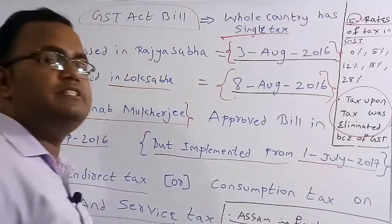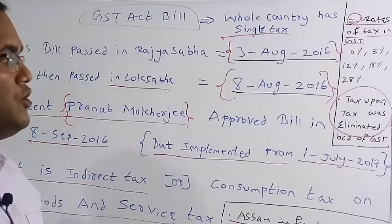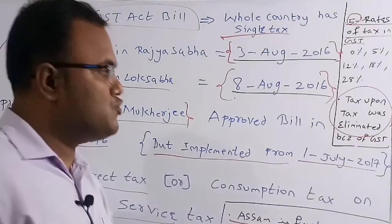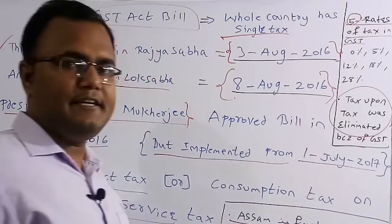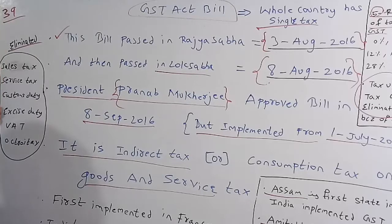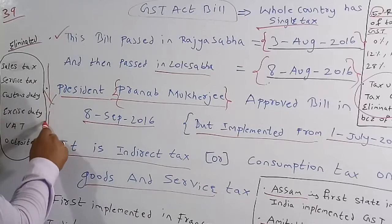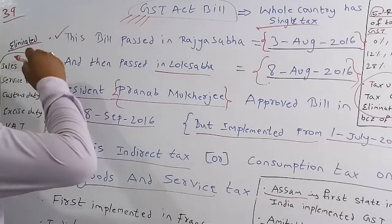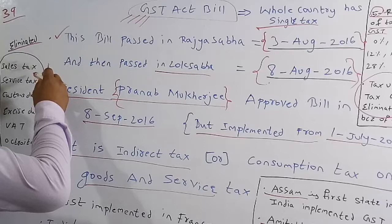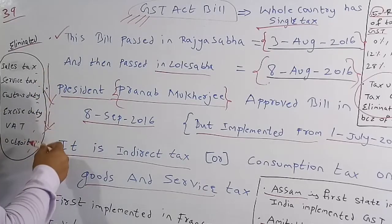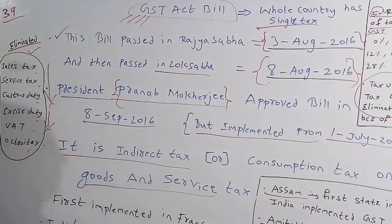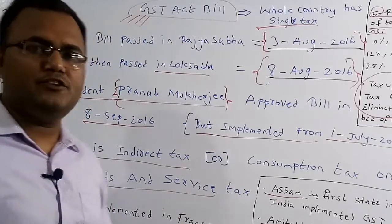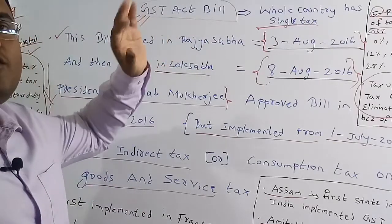Because of GST, tax-upon-tax was eliminated. Previously there were taxes upon taxes, but GST eliminated this. The taxes eliminated include: sales tax, service tax, custom/produce tax, excise duty tax, VAT, and octroi tax. All these were eliminated with the implementation of GST.